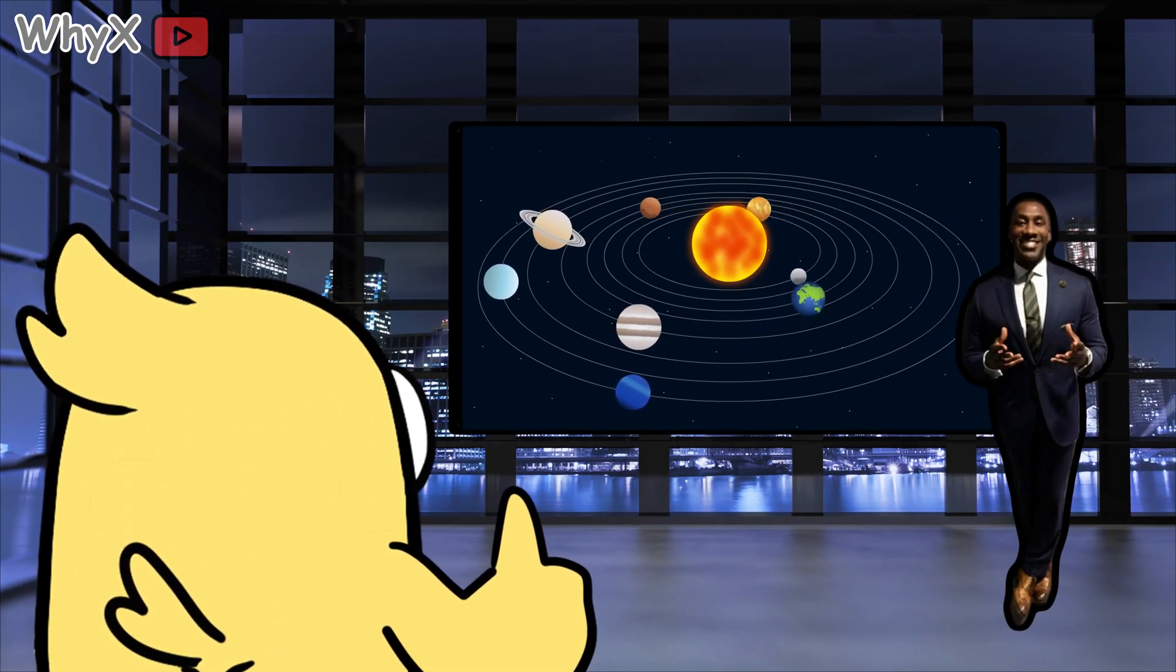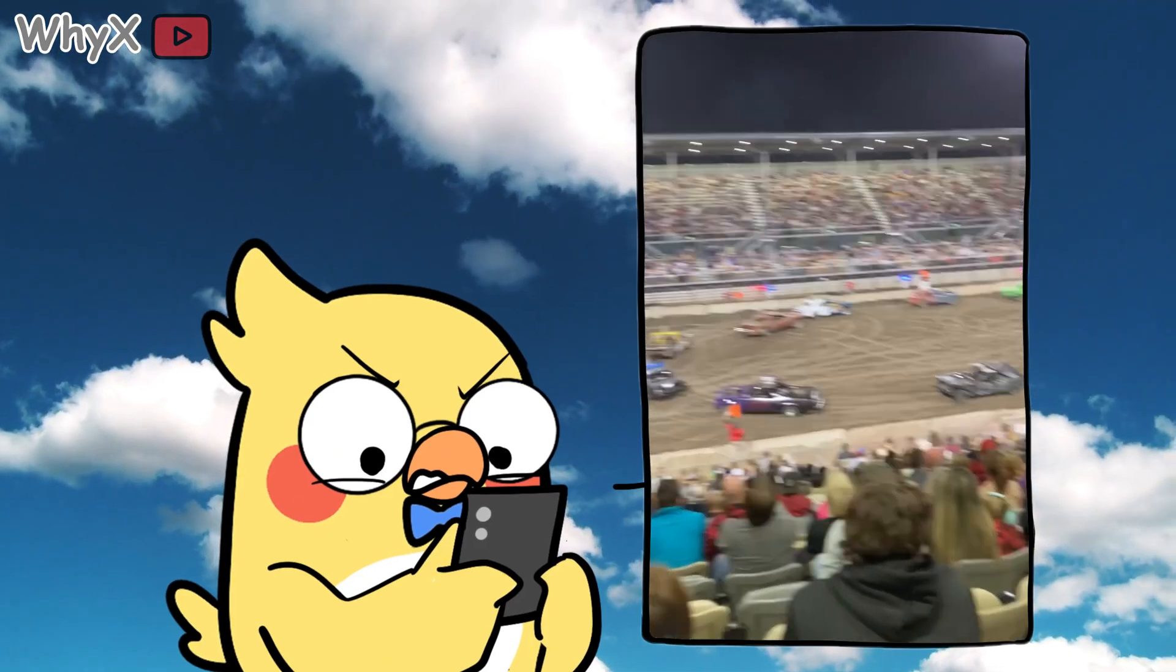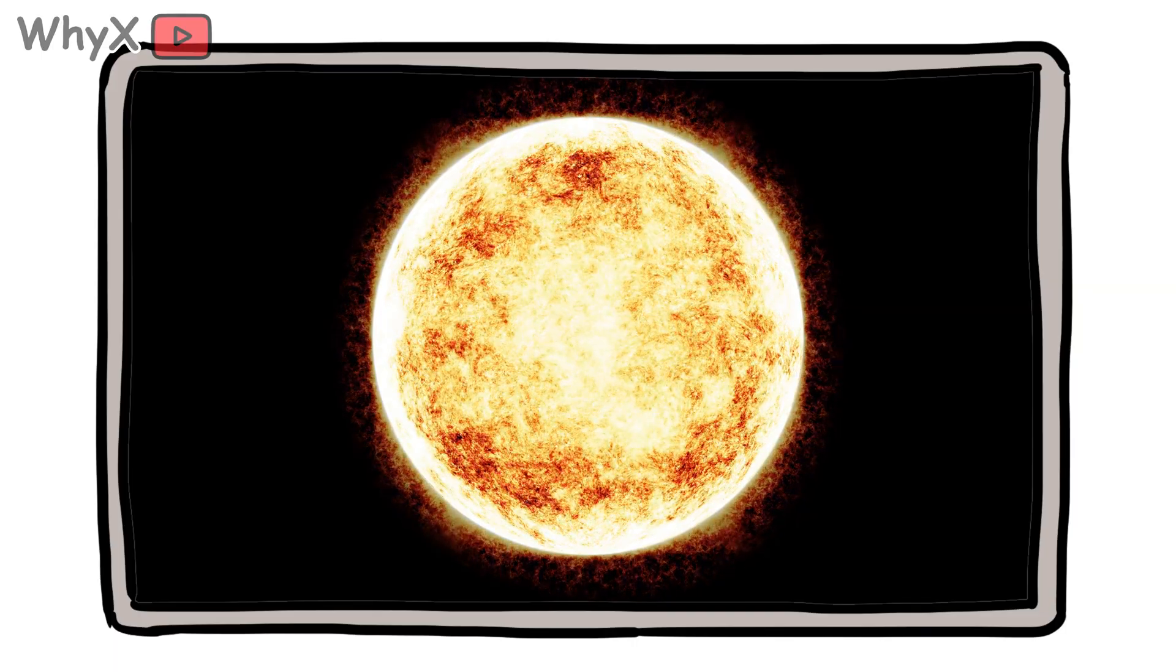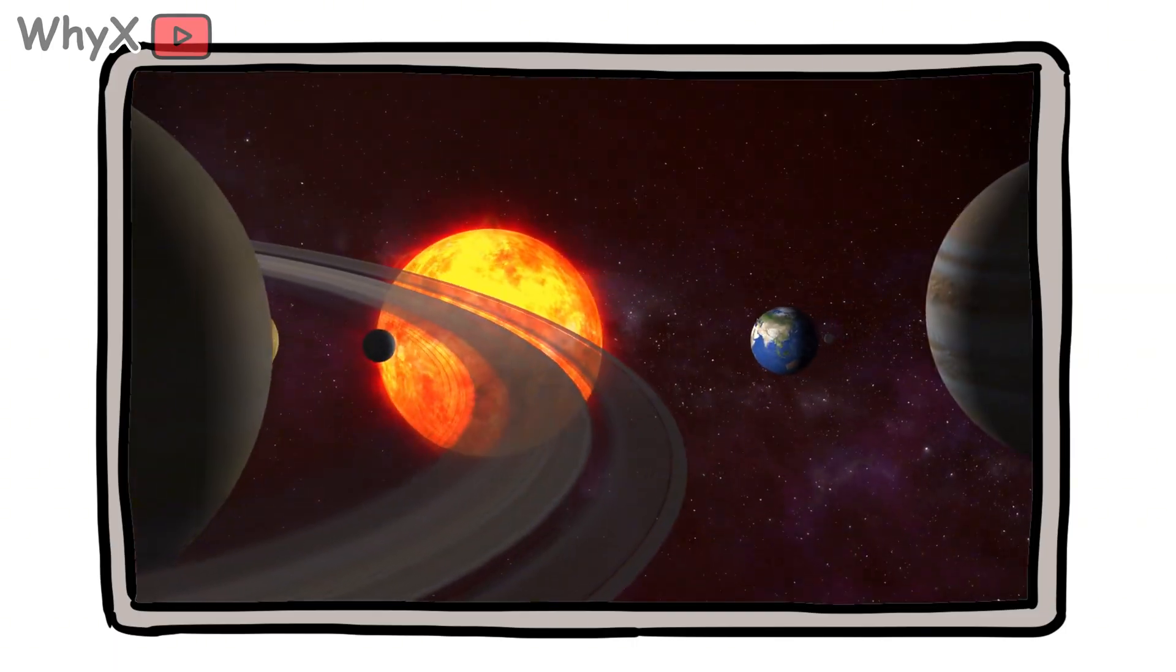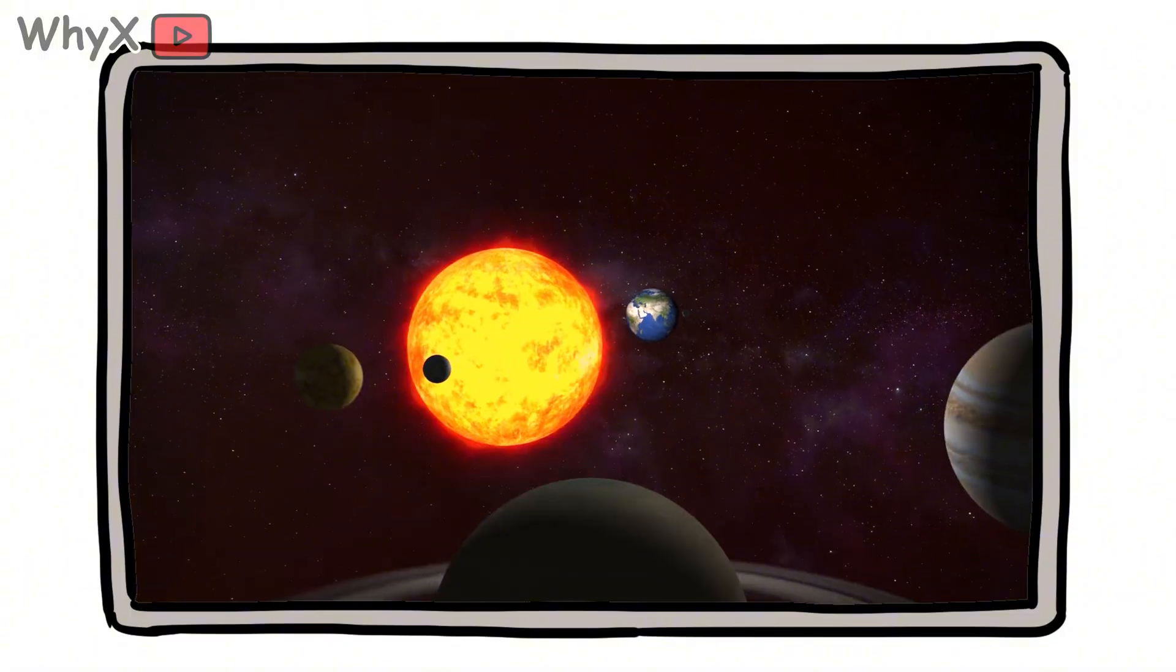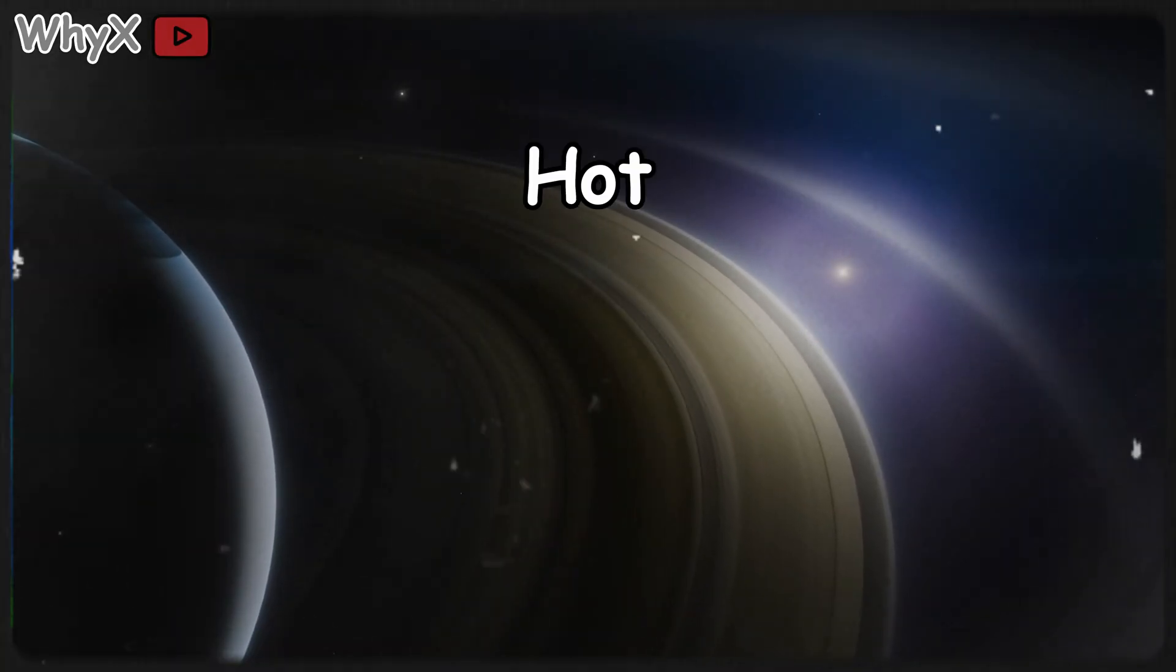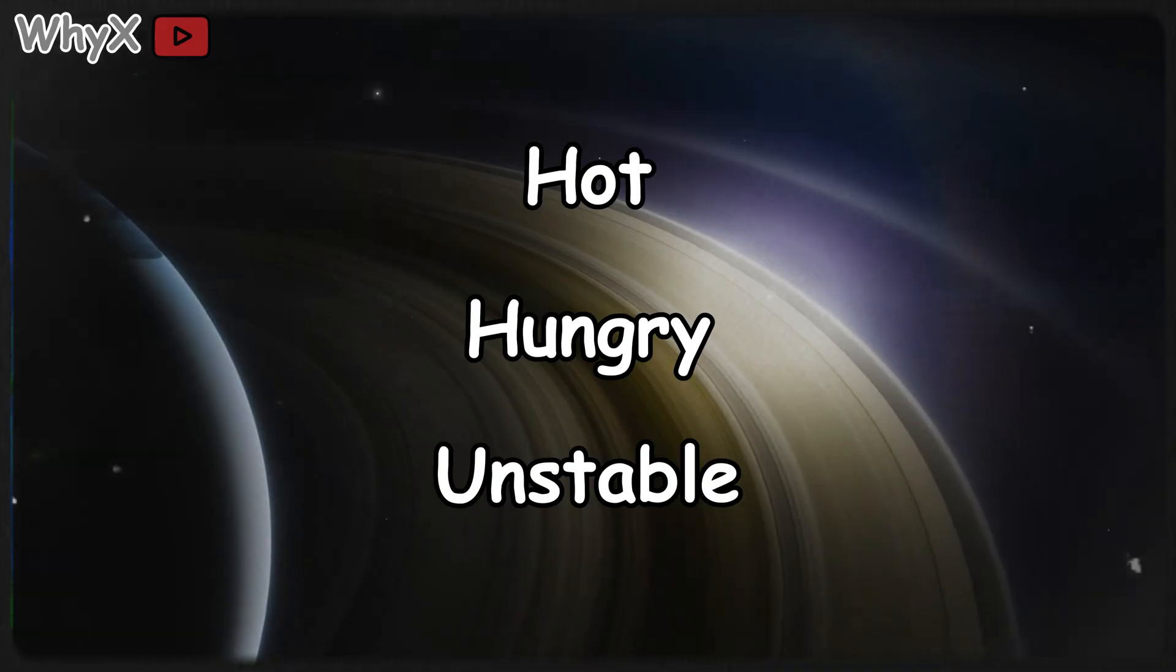Picture this. The early solar system isn't a calm family portrait. It's a demolition derby with better lighting. The sun has just fired up nuclear fusion. A disk of dust and gas spins around it like a cosmic pottery wheel and half-baked worlds, hot, hungry, and unstable, keep elbowing each other for elbow room.